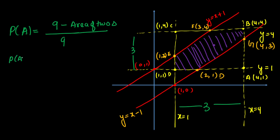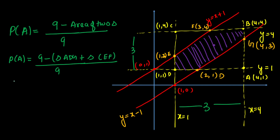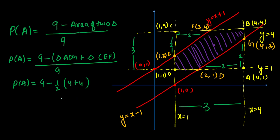P(A) = (9 - area of 2 triangles) / 9. The first triangle has vertices A(4,1), D(2,1), G(4,3): base = 2 (from x=2 to x=4) and height = 2 (from y=1 to y=3), area = ½ × 2 × 2 = 2. The second triangle with vertices C(1,4), E(1,2), F(3,4): base = 2 and height = 2, area = 2. Total removed = 4.